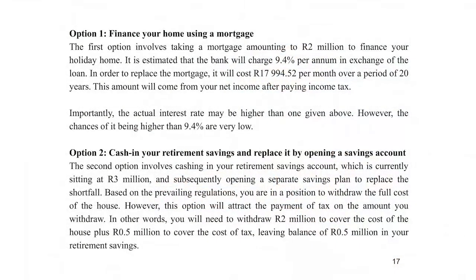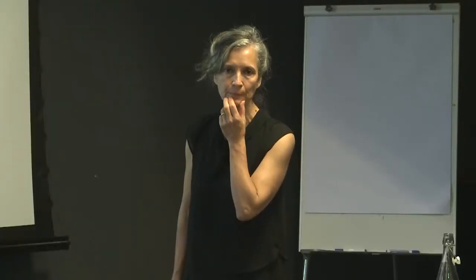Then option two: cash in your retirement savings and replace it by opening a savings account. I would imagine that these two headings, which I like very much, come straight from the notes. So I'm a bit worried about the last statement which says 'however, the chances of it being higher than 9.4% are very low.' You mean the 'very'? Would you take the 'very' out? Or you would either say 'are slim'?